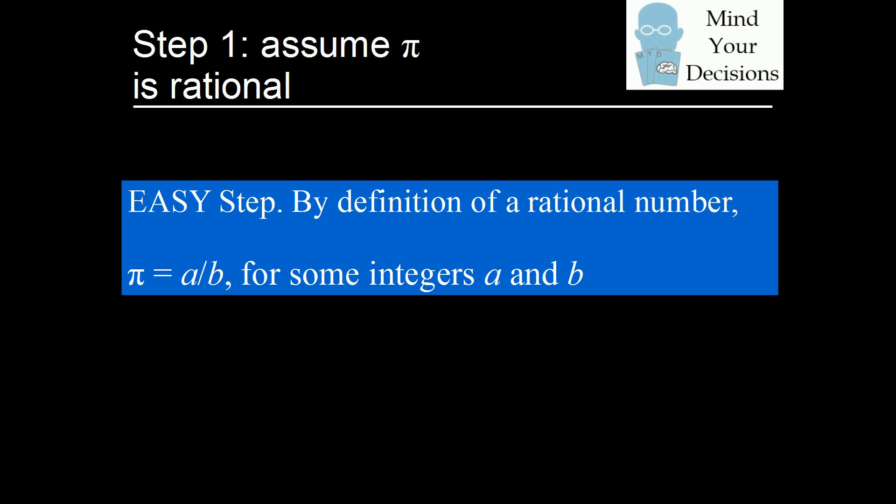The first step of the proof is easy. By the definition of a rational number, if we assume pi is rational, that means pi will equal a over b for integers a and b.